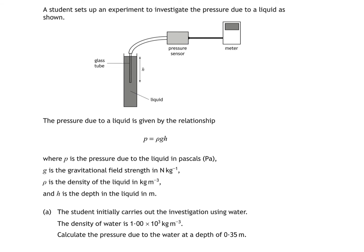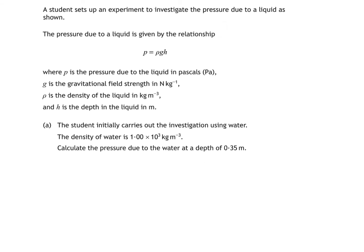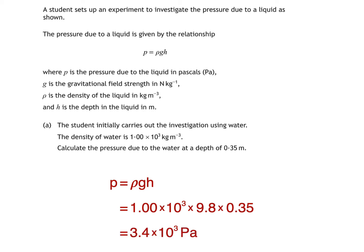So we write our equation, then substitute our values, giving a pressure equal to 1.00 x 10³ × 9.8 × 0.35, which is equal to 3.4 x 10³ pascals.